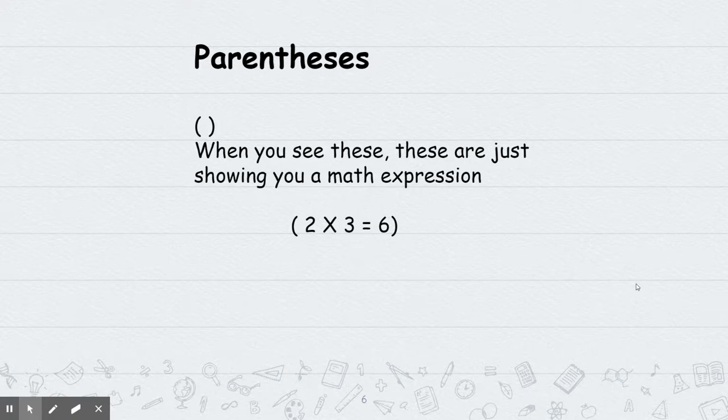So you might have 2 times 3 equals 6. Now the way they do this is they might do 2 times 3 equals 6 with parentheses around it.